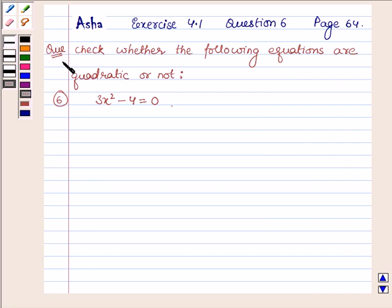The question says check whether the following equations are quadratic or not. The sixth equation is 3x squared minus 4 equals 0.